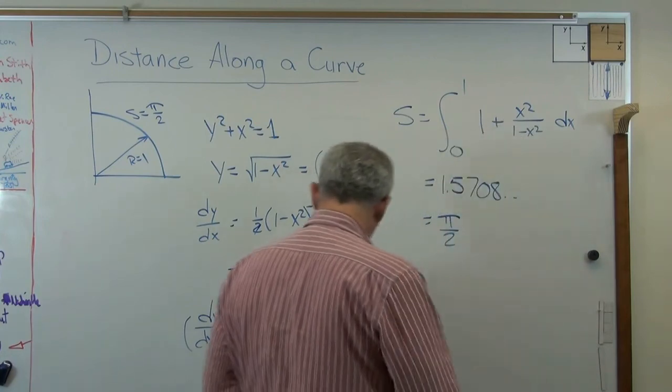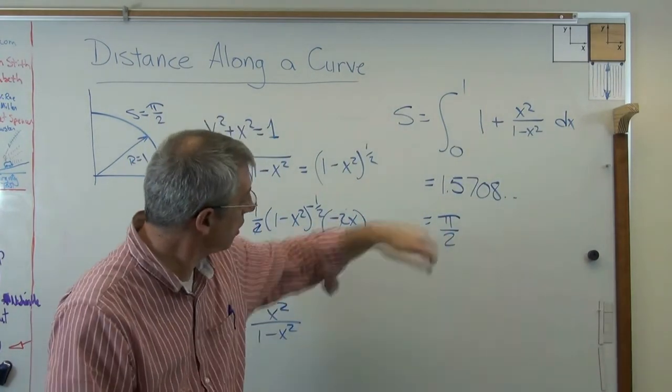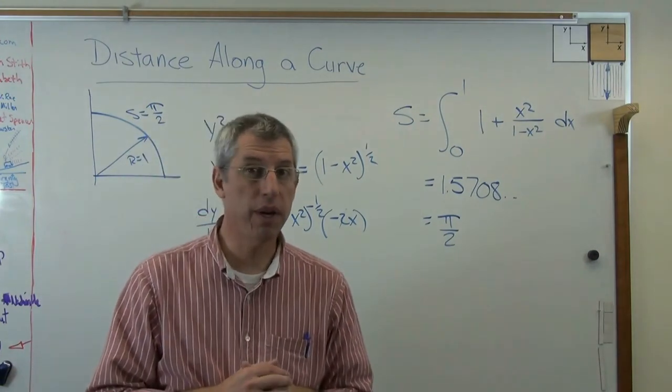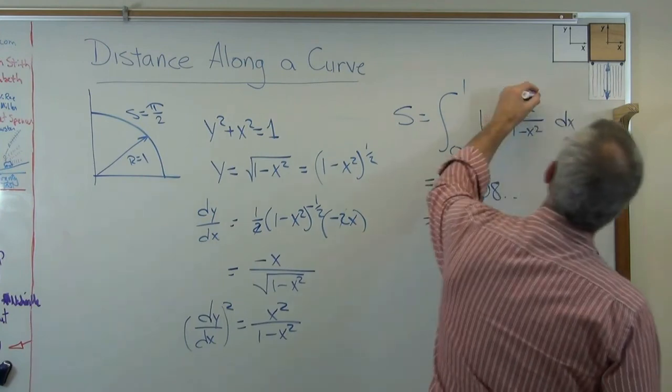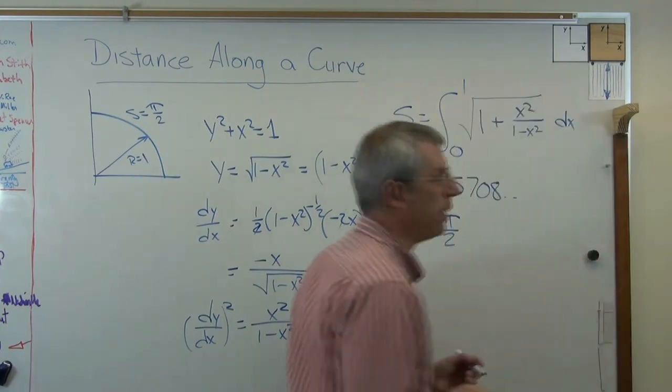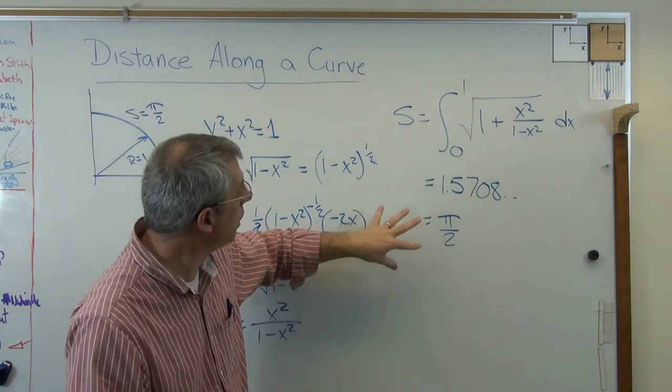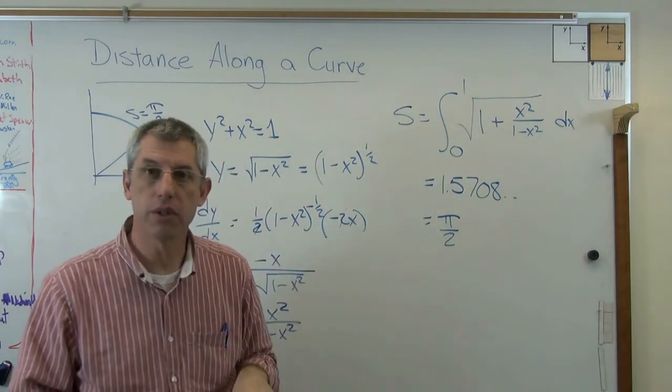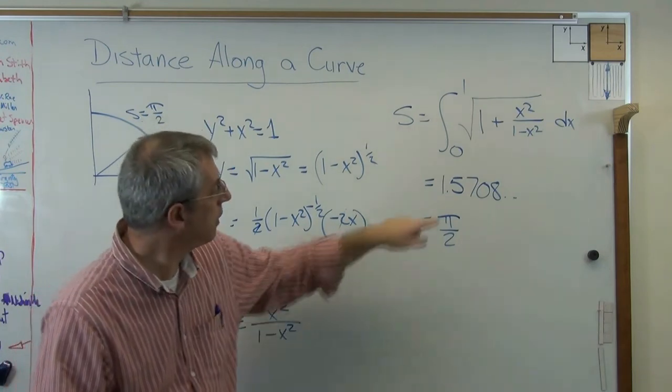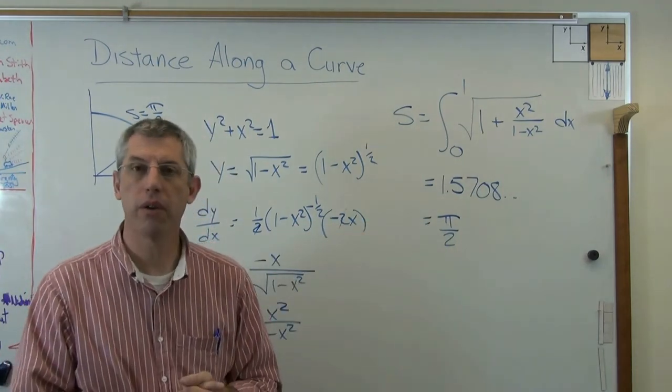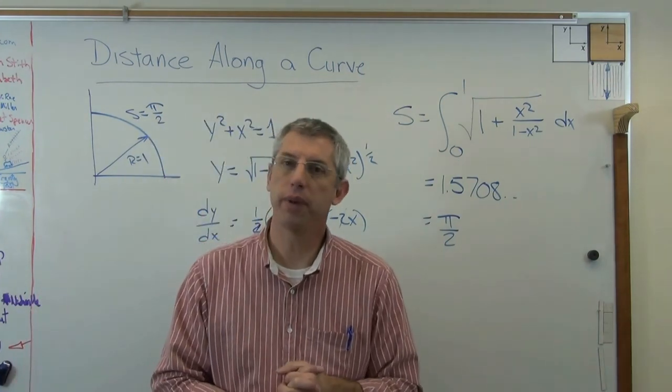So, not only have we learned how to calculate distance along a curve, just as a little side benefit, we actually found a way to calculate pi. As long as I could, oops, boy did I mess that up. Sorry, guys. There. Now I'm happy. My apologies. Okay, so not only did we learn how to calculate distance along a curve, also learned a way of calculating pi. If I were to double this, I would know what the value of pi is. So there you go. Two for one deal today. I hope this helps, and I'll see you next time.